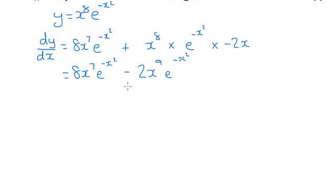Now you'll notice that lots of this can be factorized out. So I'm going to take out a factor of 2x^7 and the e^(-x^2), which will leave us with 4 minus x^2.